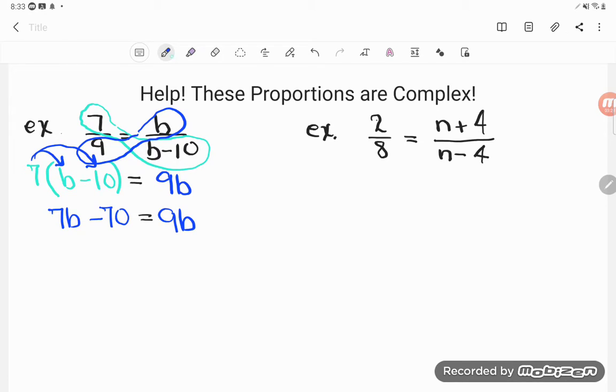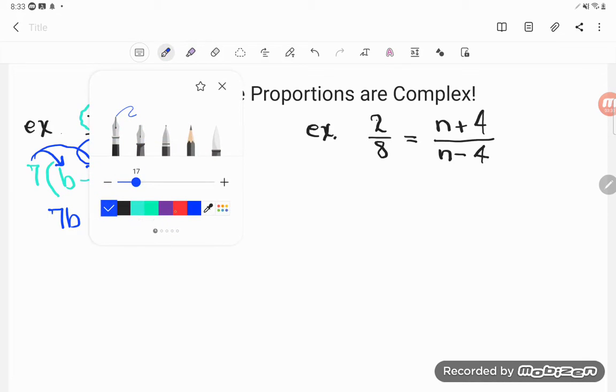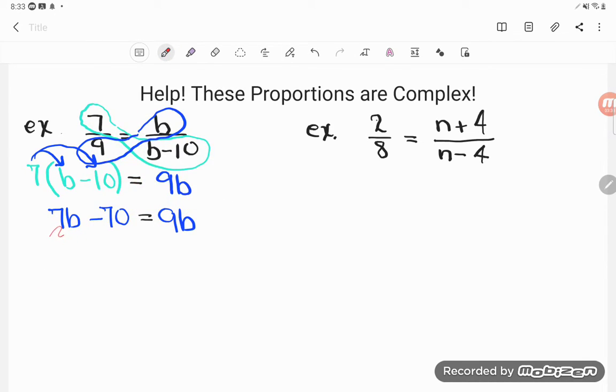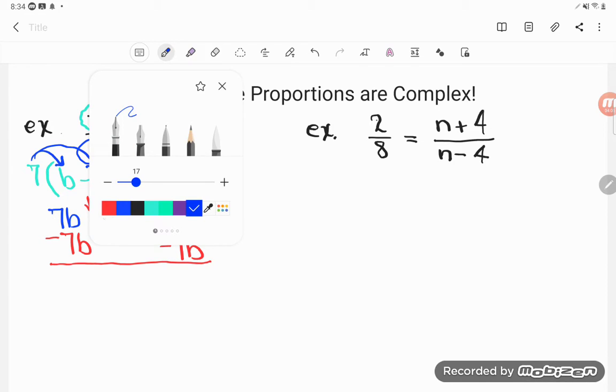Now if I want this 7b to zero out, I'm going to have to subtract it away. A lot of students say I should add it because of this minus sign here. But that minus sign is telling me what the 7b is doing. If I want the 7b to zero out and it's positive, I've got to subtract it away. I can do whatever I want as long as I do it to both sides. So I'm going to jump across the equal sign and subtract 7b. Let's see what my new equation will be.